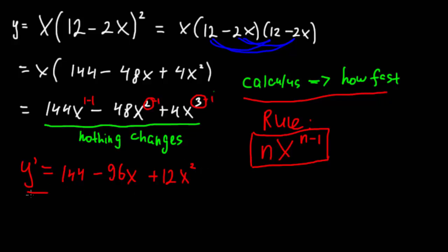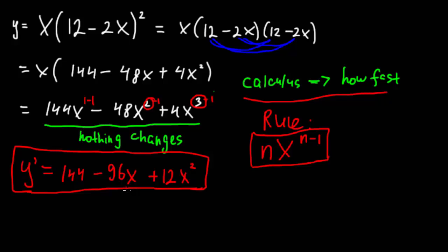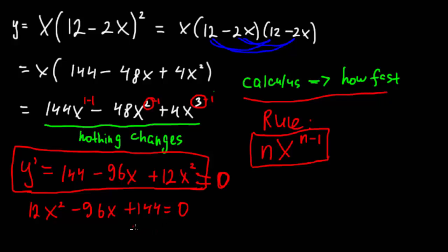This derivative represents the graph of rates of change. We don't need to graph it — all we need to do is find the stationary point, which is when the rate of change equals zero. So we set this equal to zero: 12x squared minus 96x plus 144 equals zero. And this is a quadratic function — something you may have done in grade 8 or grade 9.